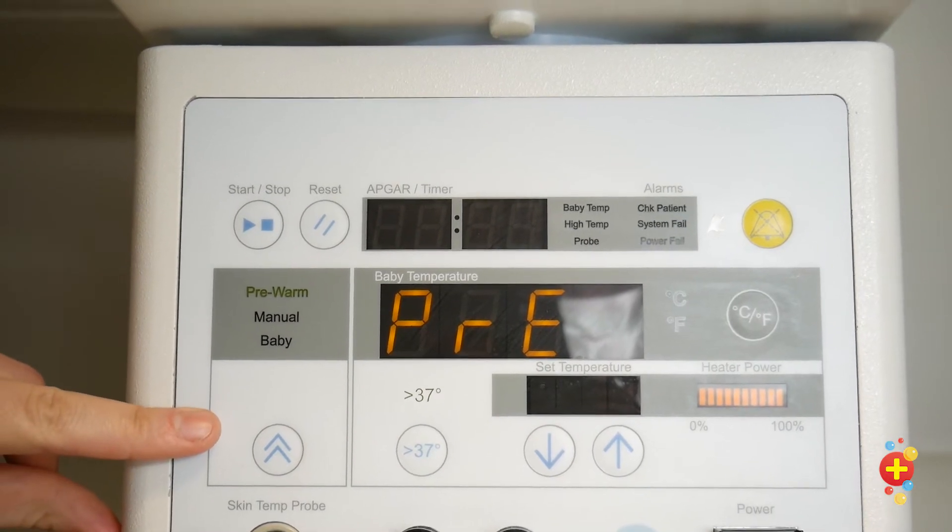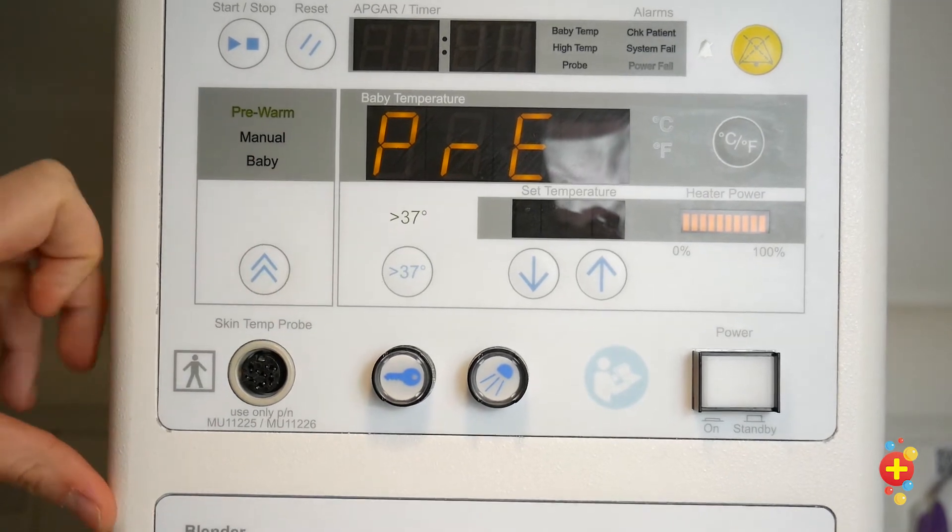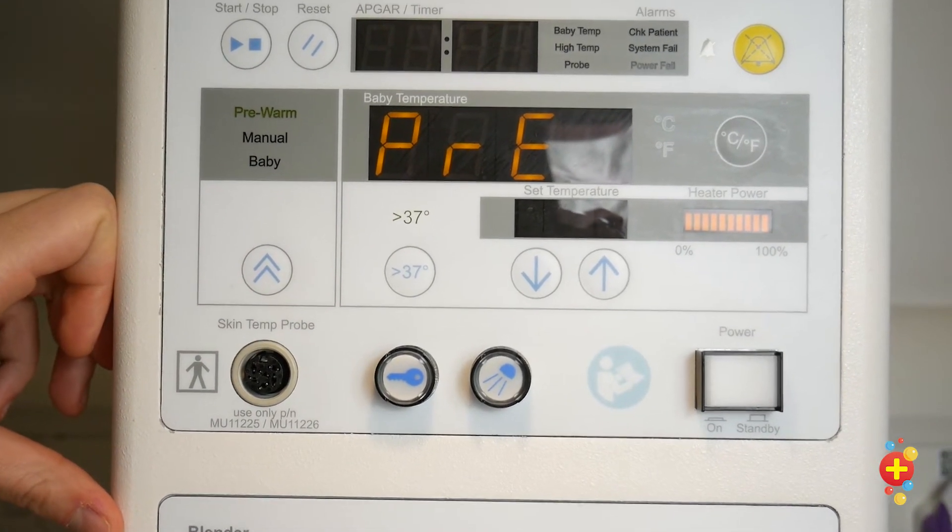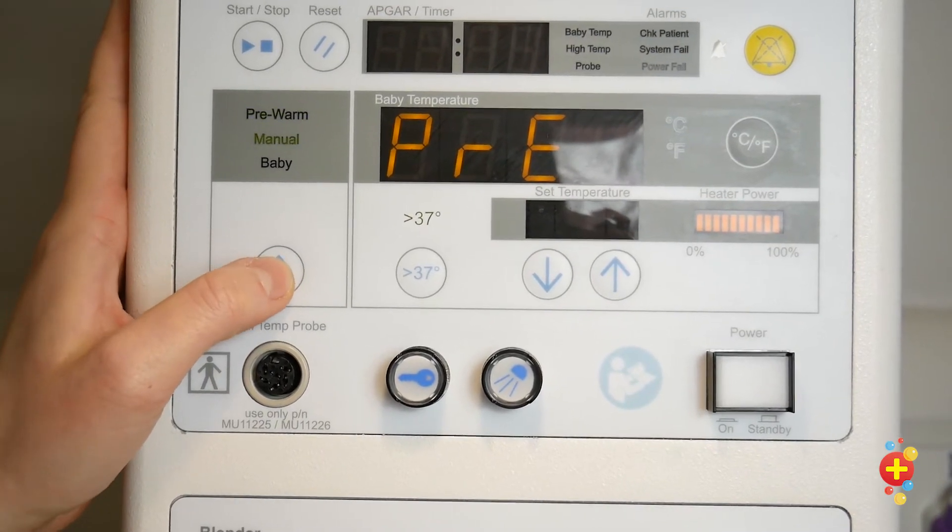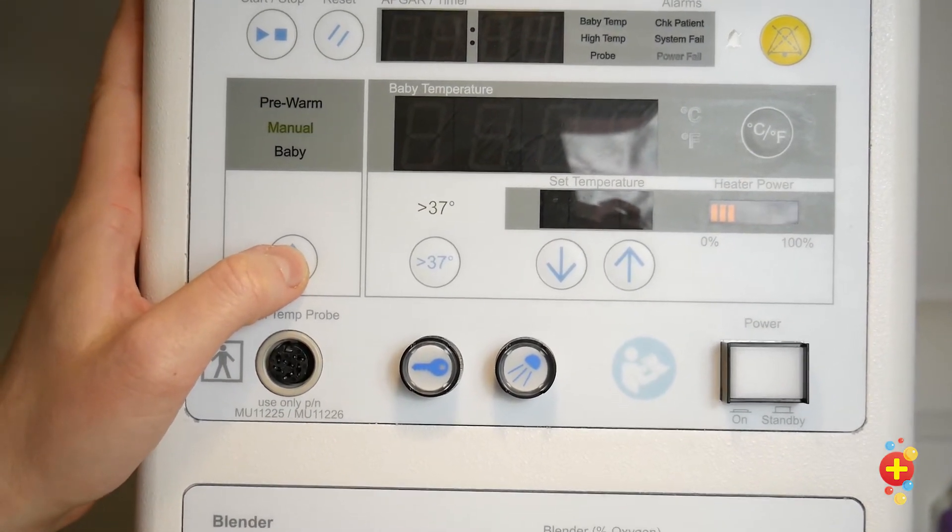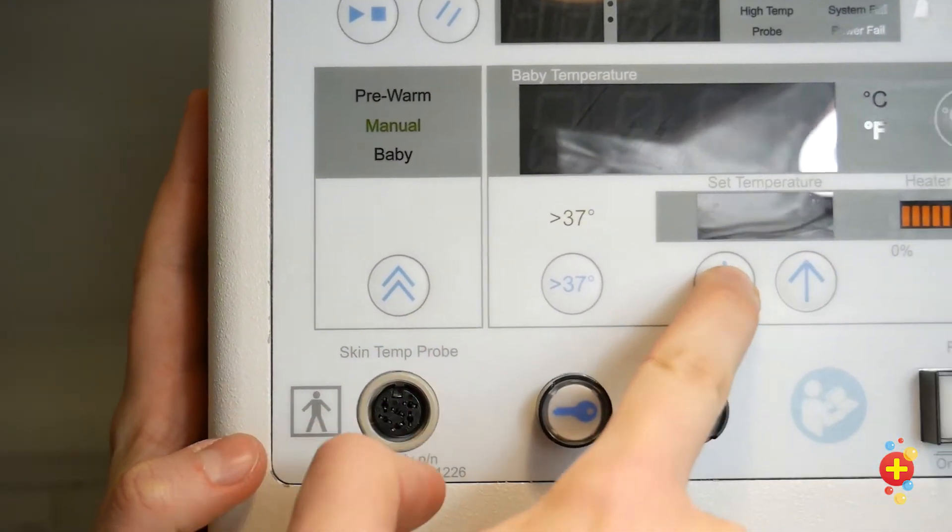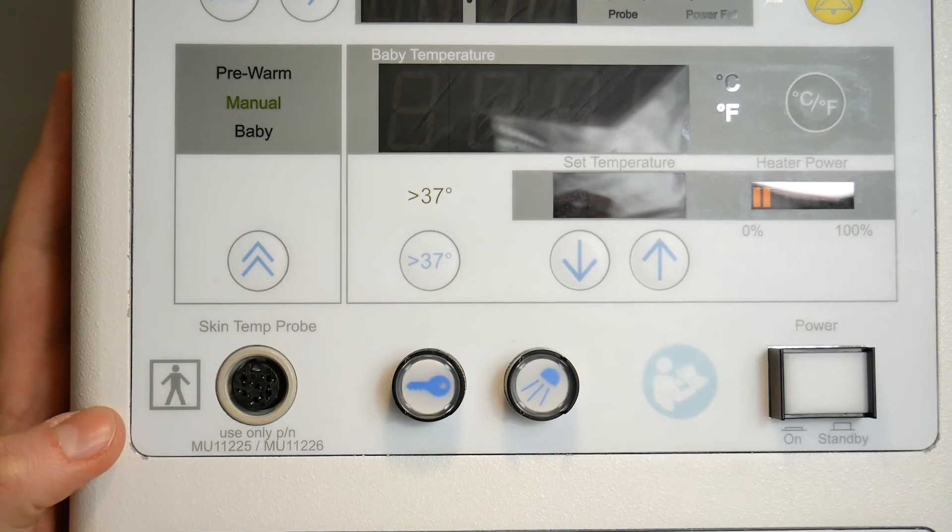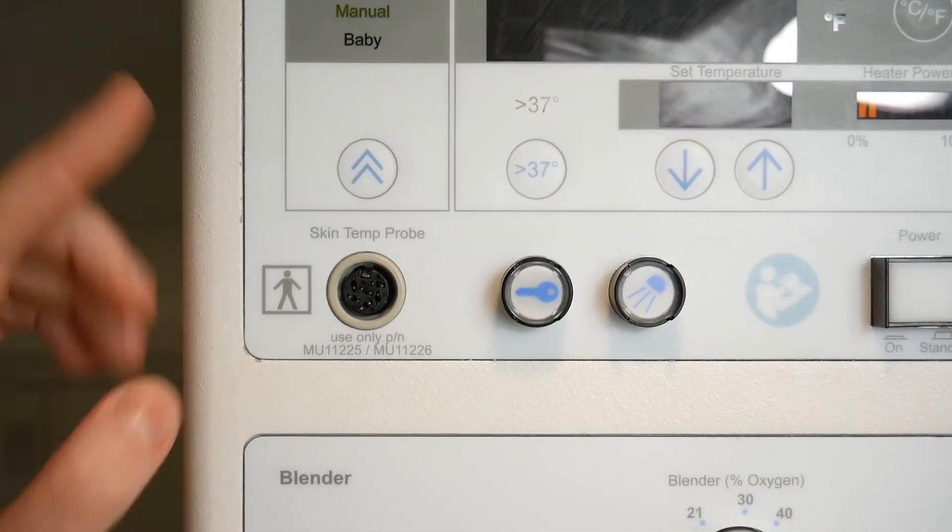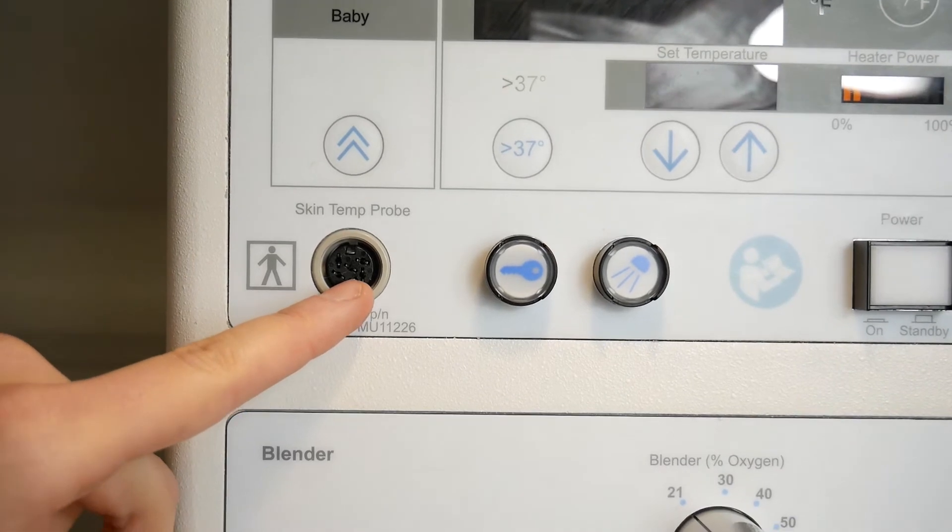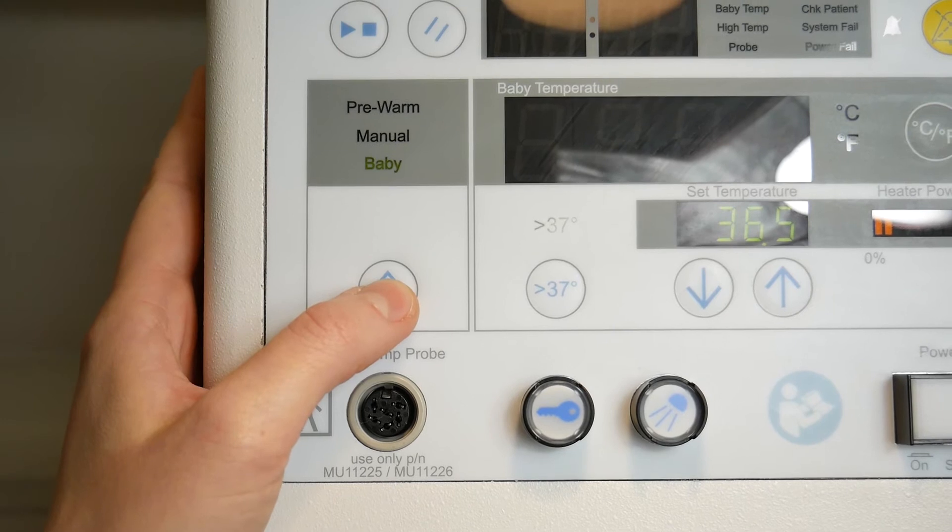Moving down we have the temperature settings. The machine will automatically turn itself to pre-warm, but say for example you want to increase the temperature of the machine in a hurry, use this button to switch it to manual. You can then dial up the temperature with these buttons here. If you're using a temperature probe to continuously monitor the baby, attach it here. You just need to remember to set the settings here from pre-warm or manual to baby.